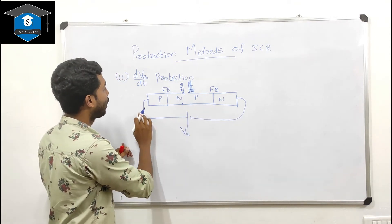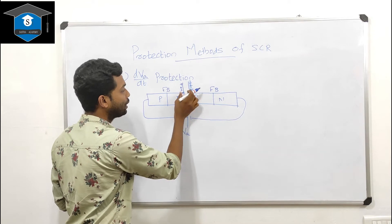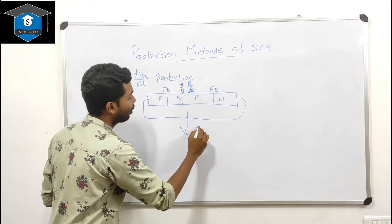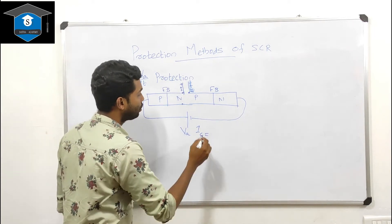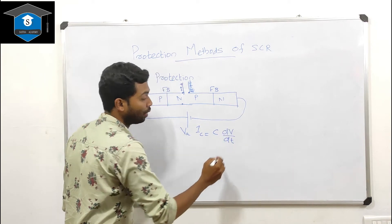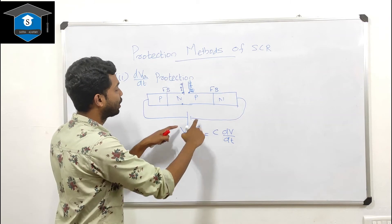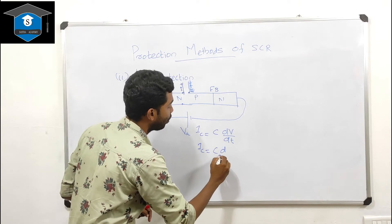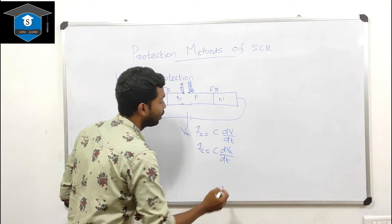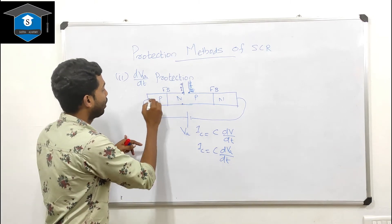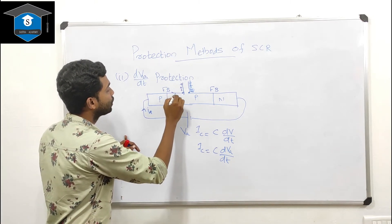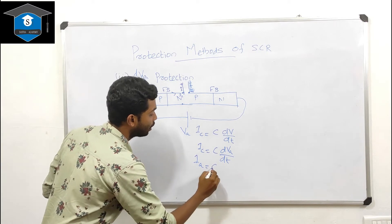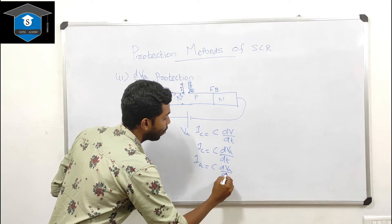The junction J2, being reverse biased, acts like a capacitance. The expression for charging current of a capacitor is ic = C × dv/dt. So the charging current ic equals C × dva/dt, where dva/dt is the rate of change of anode voltage. This ic is effectively the anode current ia = C × dva/dt.